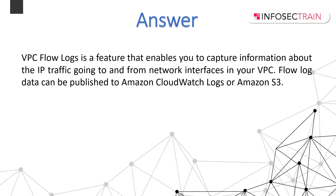Flow logs also help with determining the direction of traffic to and from the network interfaces. This flow log data is collected outside of the path of your network traffic and therefore does not affect network throughput or latency. You can create flow logs for a VPC, subnet, or a network interface. Flow logs don't monitor packet contents — for that you require a packet sniffer.